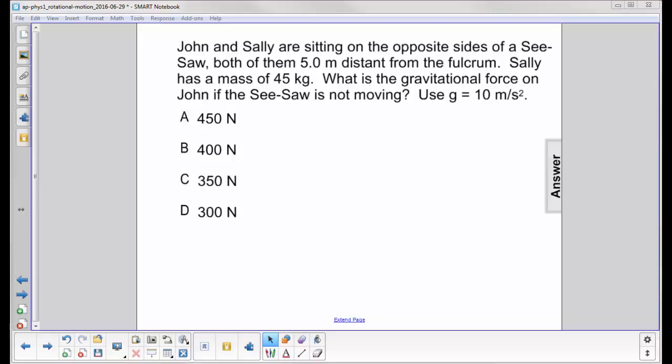John and Sally are sitting on opposite sides of a seesaw, both of them 5 meters distant from the fulcrum. Sally has a mass of 45 kilograms. What is the gravitational force on John if the seesaw is not moving? Use g equals 10 meters per second squared.